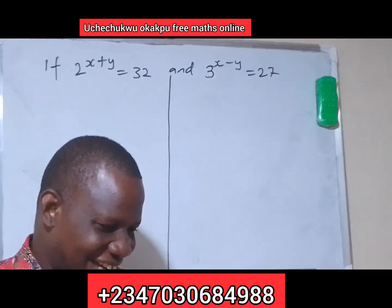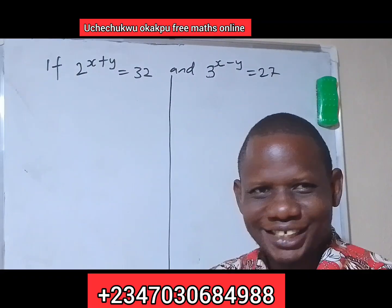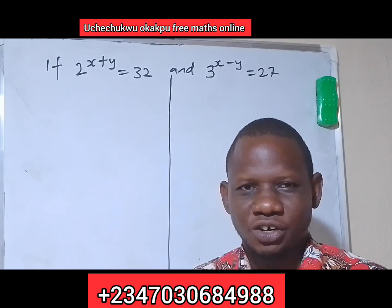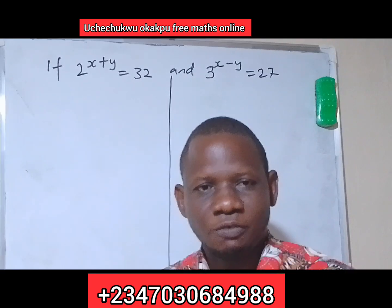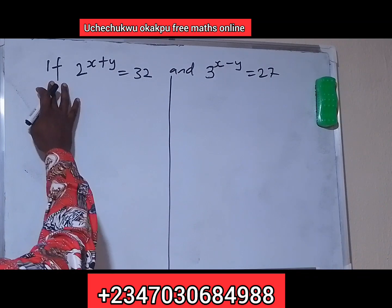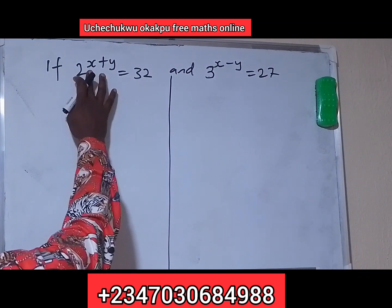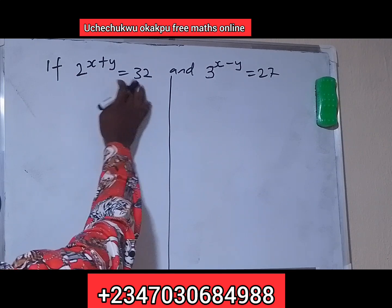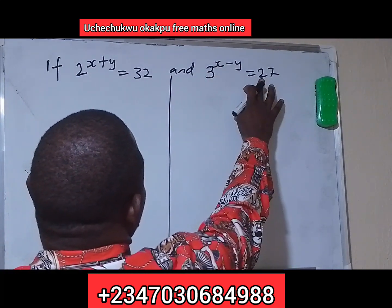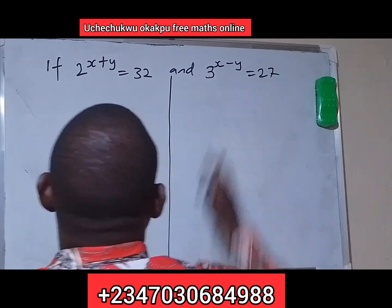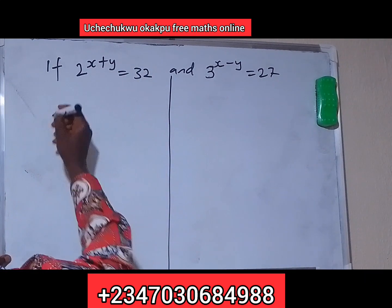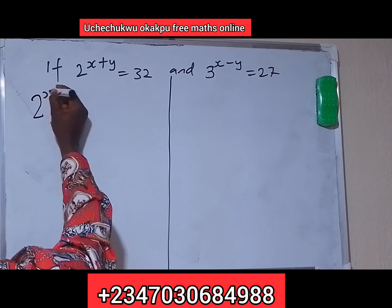Hello viewers, let's look at this exponential equation and solve this simultaneous equation. We are told that 2 raised to the power x plus y is equal to 32, and 3 raised to the power x minus y is equal to 27. Find x and y.